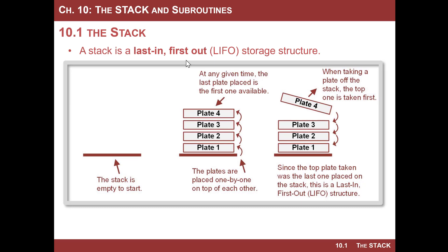When you go back to get a plate, you can only take the top plate off. So you can only take plate four off, then get access to plate three, then plate two, then plate one. We call this a last-in-first-out data structure. What's nice about this is that you inherently keep the order of data that's put onto the stack — one, two, three, four, and then you pull off four, three, two, one. If you can keep track of how many things you've pushed on and how many you've taken off, you can know where you're at any given time on the stack.